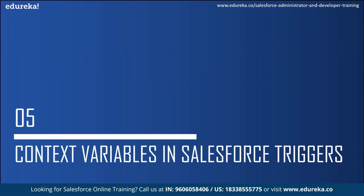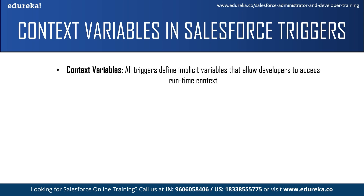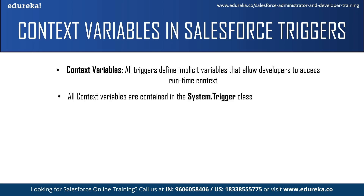Now let us move on to context variables. All triggers define implicit variables that allow developers to access runtime context. In simple terms, context variables are special variables managed and created by Salesforce itself, which give us information about the trigger. These context variables are required when we want a piece of code inside the trigger to run only for a particular event, avoiding running code not required for a specific event. All context variables are contained in the System.Trigger class.